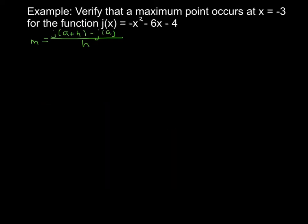We're going to do an example problem. Verify that a maximum point occurs at x equals negative 3 for the function j(x) equals negative x squared minus 6x minus 4. I'm going to use the method as discussed. I've written the formula for the slope: j(a+h) minus j(a) all over h, where h is a small positive or small negative number.